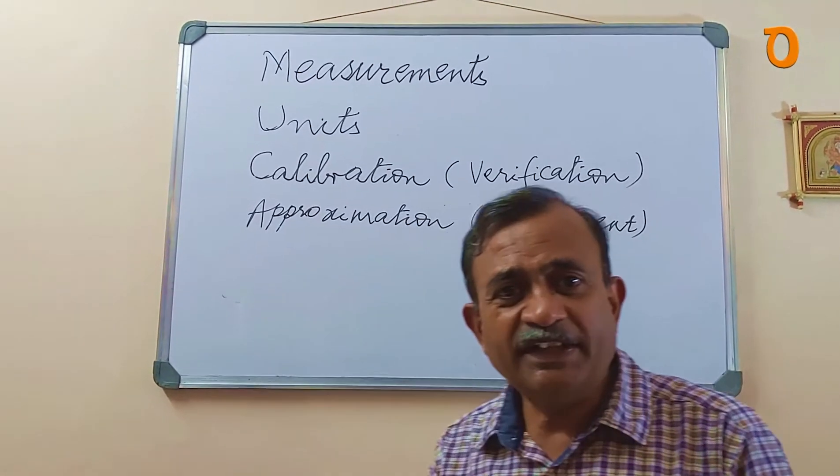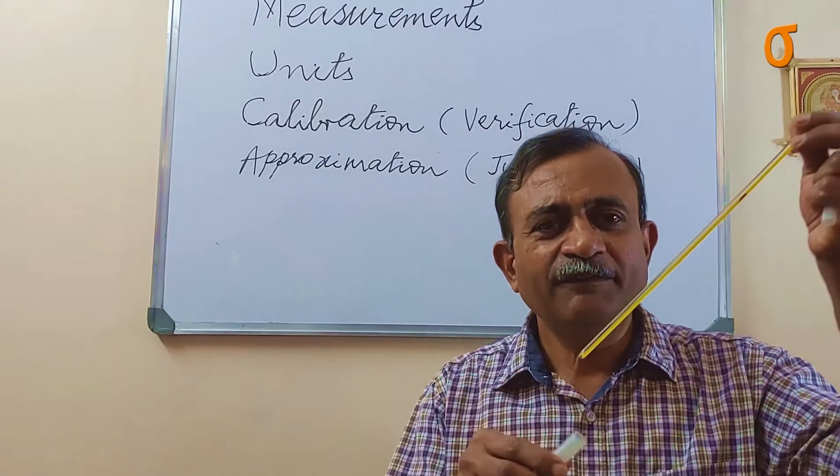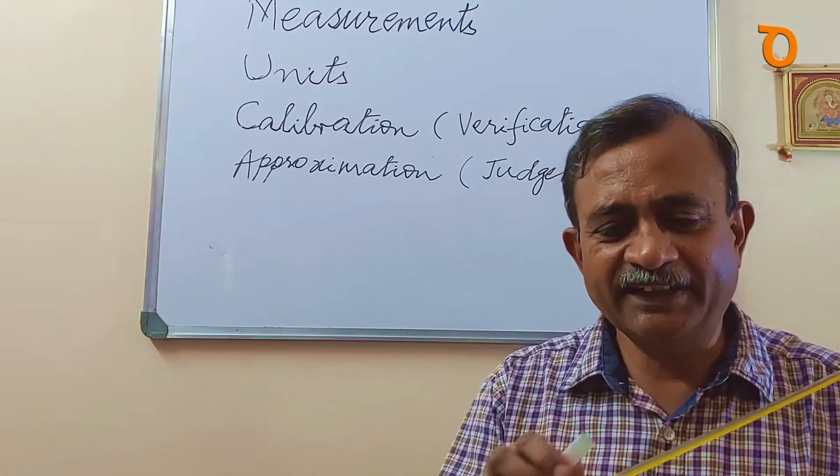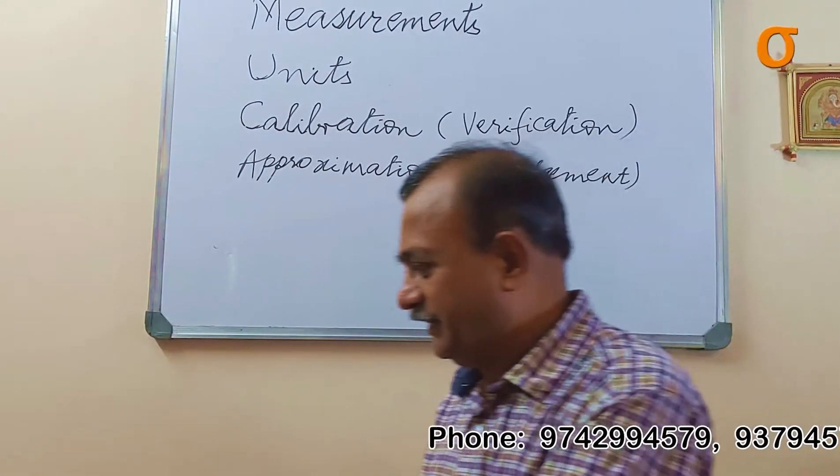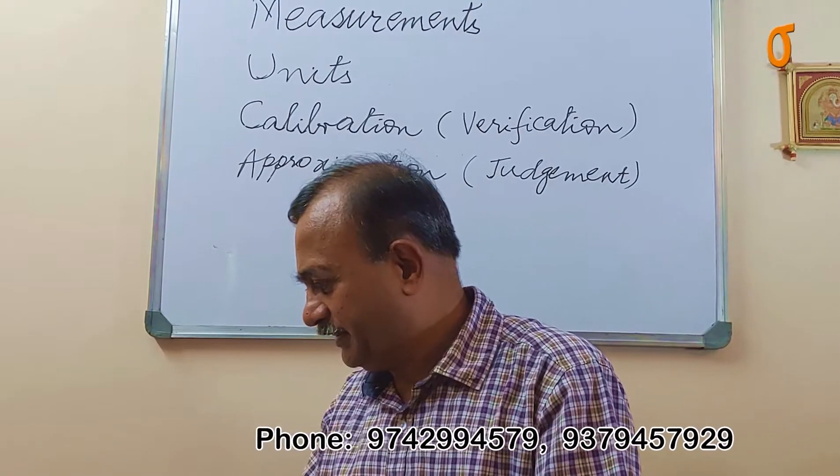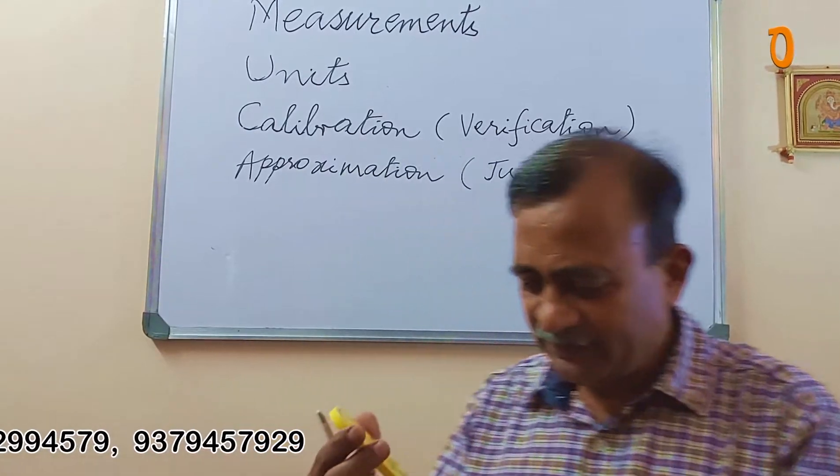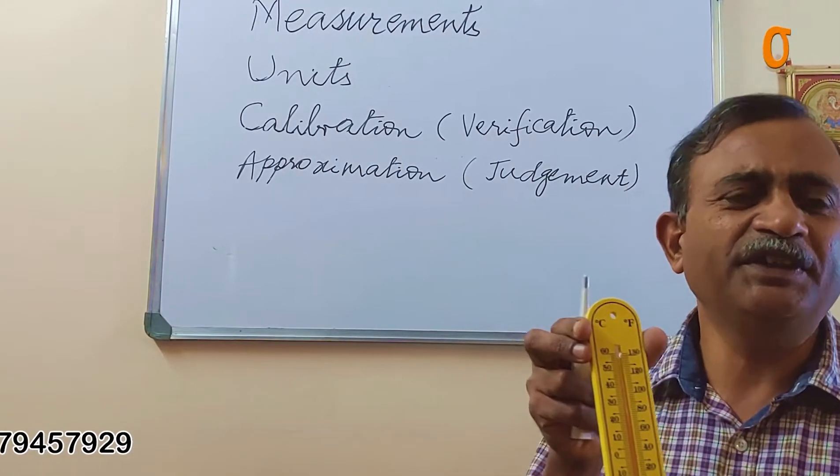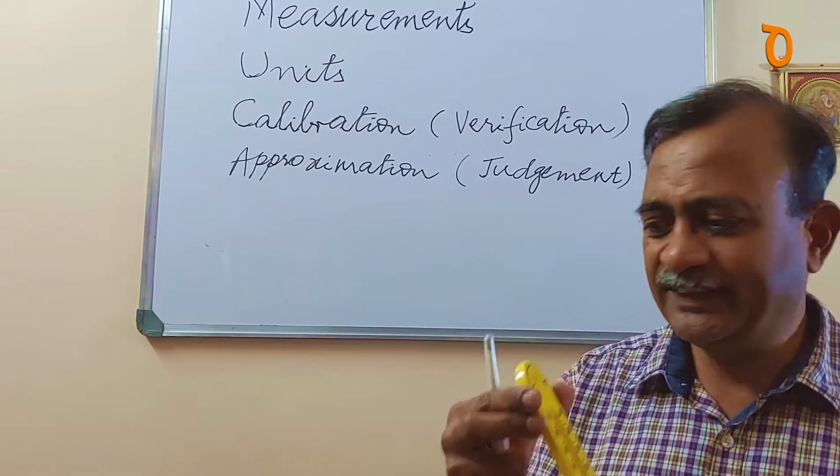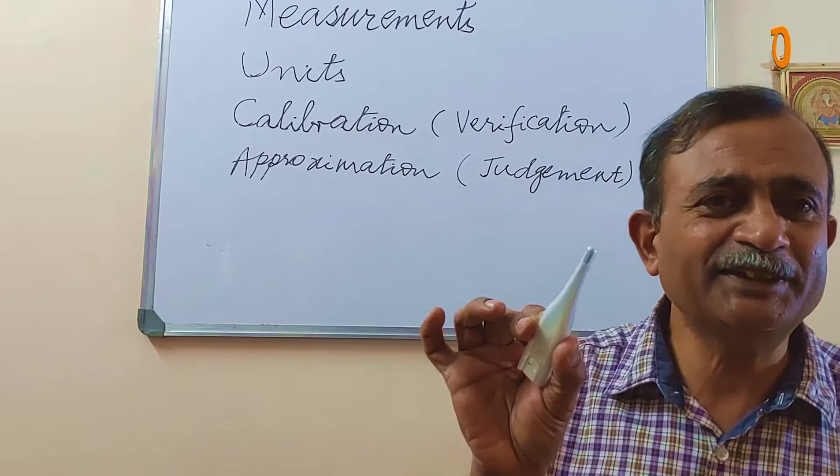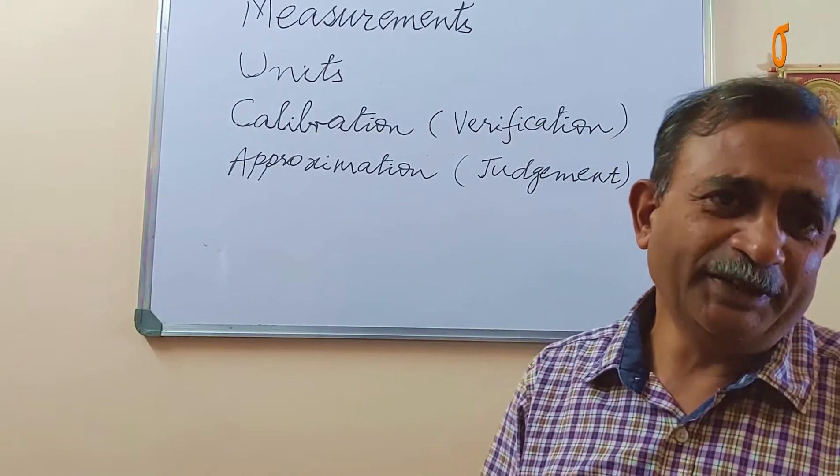For measuring temperature we have thermometers. This is a laboratory thermometer which has a range from minus 10 to plus 110 degrees centigrade. Another type of thermometer is this weather thermometer which we hang on the wall and we can measure the temperature of the surroundings. Another type of thermometer is this clinical thermometer which is used by the doctor to measure my body temperature.